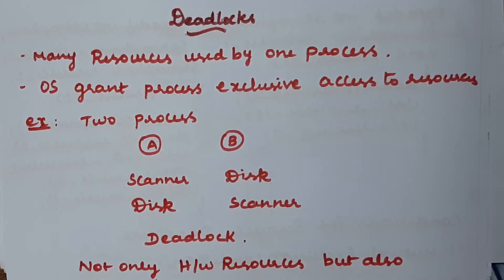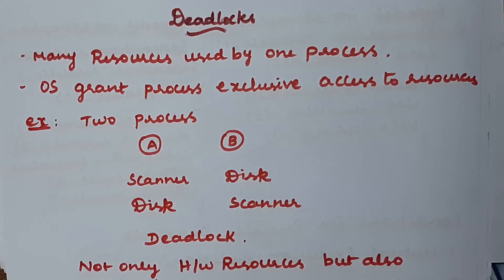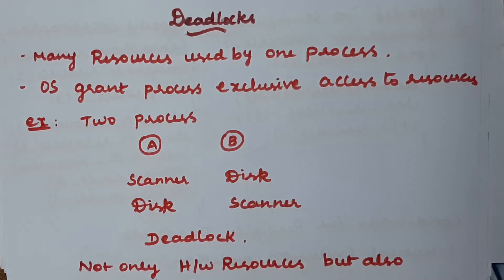The operating system provides exclusive access to particular resources for any one process at a time. If there is exclusive access to a resource by one process at a time, it can lead to a deadlock situation. However, if you have shareable resources — where all processes can use that resource simultaneously — we will not get a deadlock in that situation.